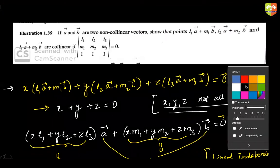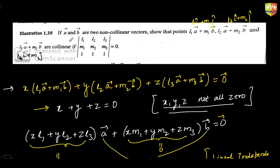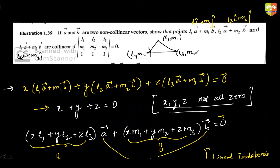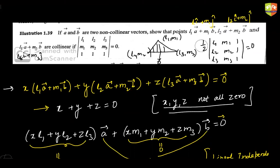A simpler way: treat these three points as having coordinates (l1, m1), (l2, m2), (l3, m3). For collinearity, the area of the triangle they form must vanish. The area expression is half times the determinant: l1 m1 1 / l2 m2 1 / l3 m3 1, set equal to zero. Dropping the half, the determinant equals zero. Transposing gives the required expression.